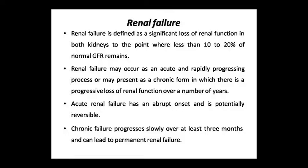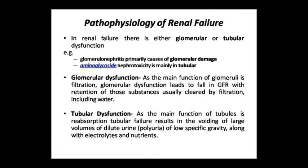Acute renal failure progresses to end-stage but is potentially reversible - we can treat it. Chronic renal failure, however, is slow and progressive. For at least three months there is ongoing damage, leading to permanent renal failure. This is an irreversible type of deterioration which we cannot fix. The pathophysiology involves progressive destruction of nephrons.